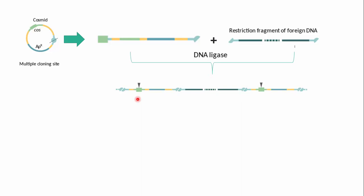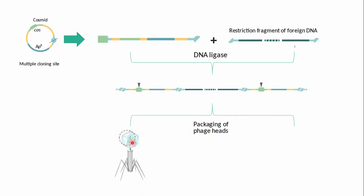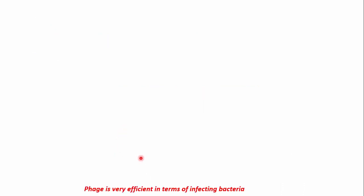In this scheme, the cos sites are 30 to 50 kb away from each other, and the recombinant DNA could be easily packaged into the phage head by in vitro packaging. All the recombinants would get packaged; if any self-ligated products are smaller than the desired size, they would not be packaged inside the phage head.